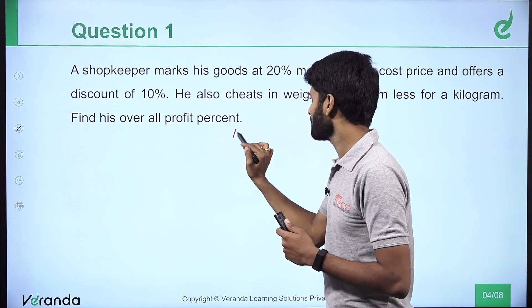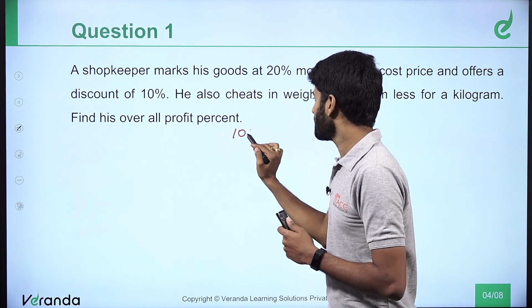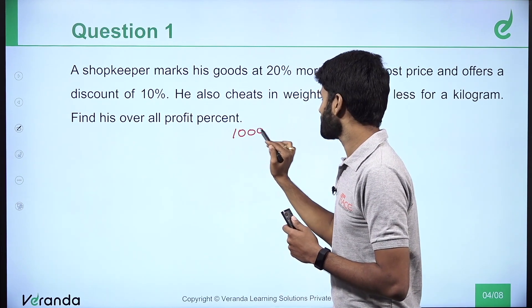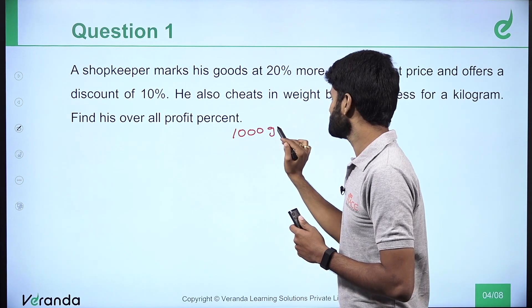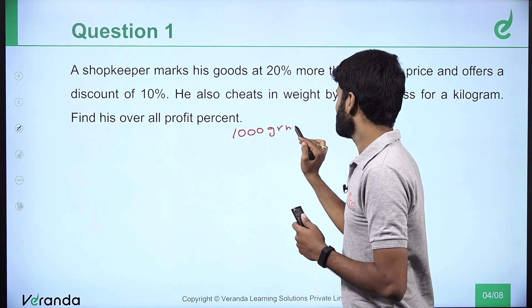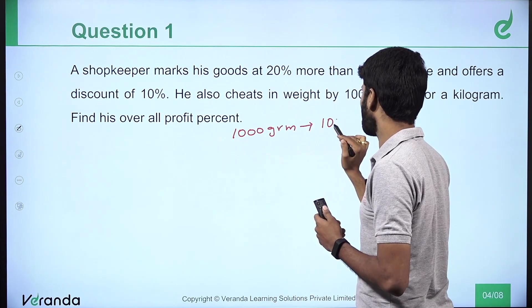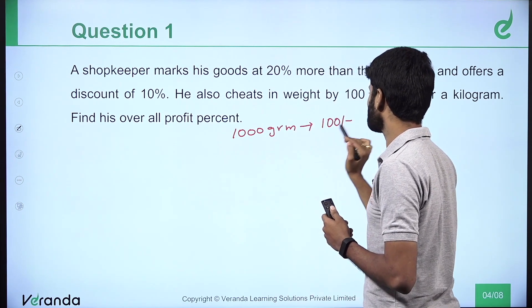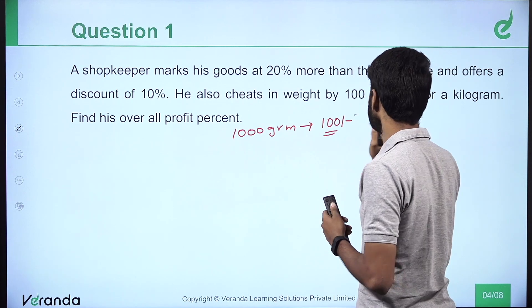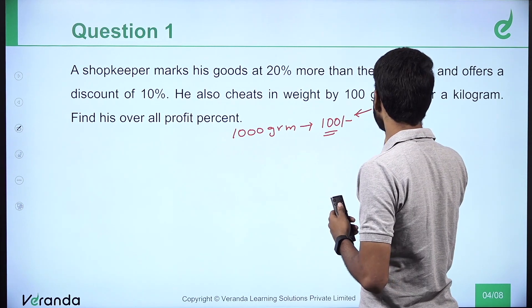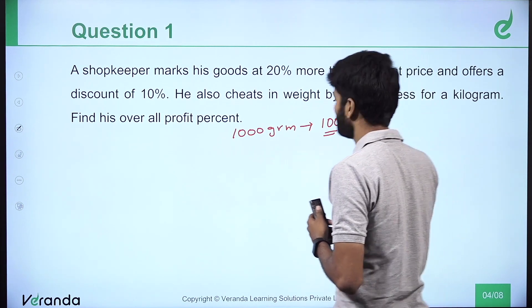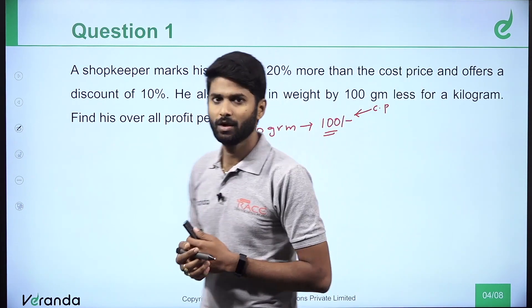First, 1 kilogram means 1000 grams. You can take 100 rupees as the cost price.